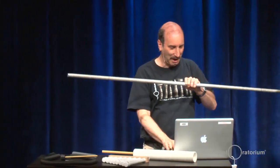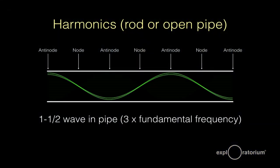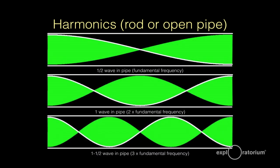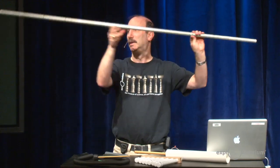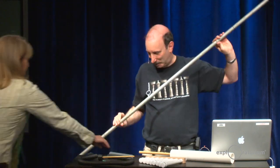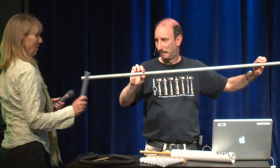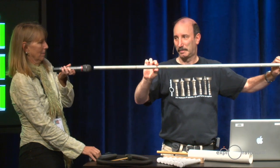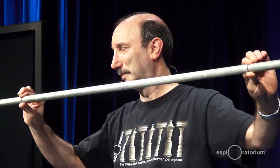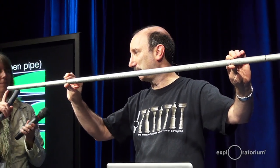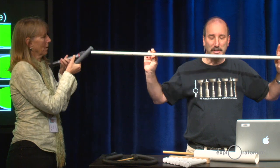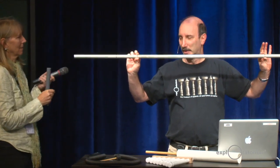The next one up — you notice the next one has an anti-node in the middle and two nodes, so I'd have to hold it here and here. Now using this hard rod to hit it on the end — much higher, that's twice the frequency. Can you hear that? Almost distressingly. And if you touch it at the end, you damp it out. And if I touch it in the middle — the middle is no longer a node, so if I touch it here I damp it out as well. So that's the second harmonic.